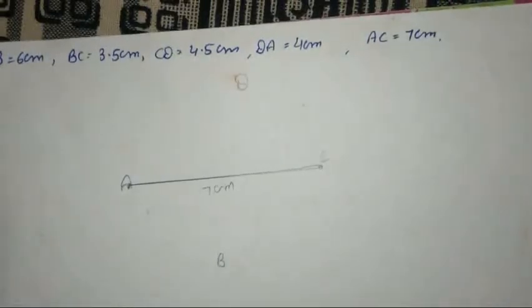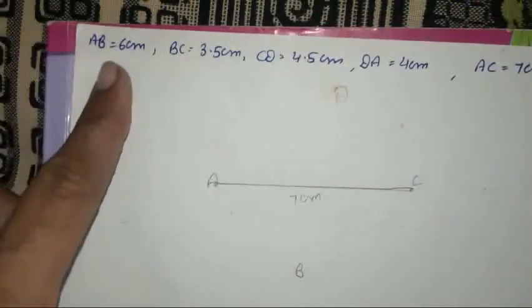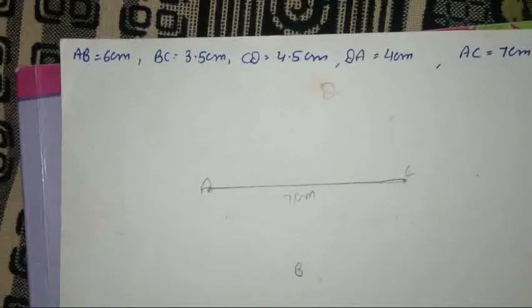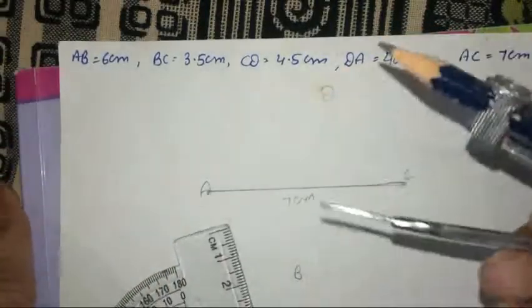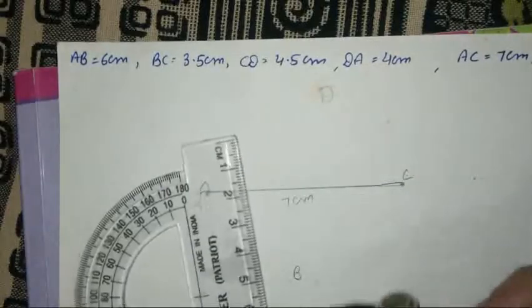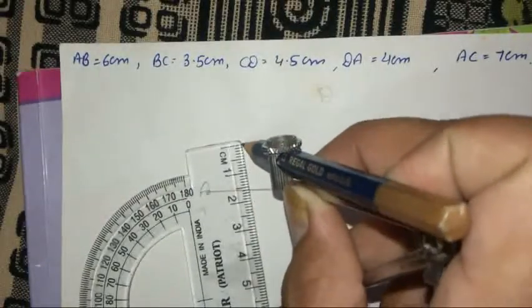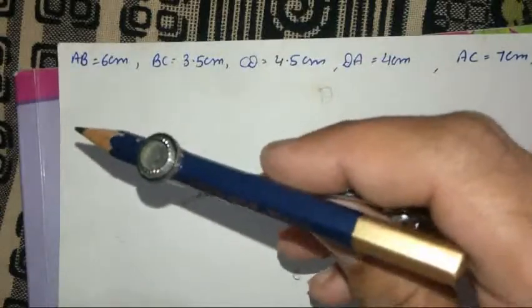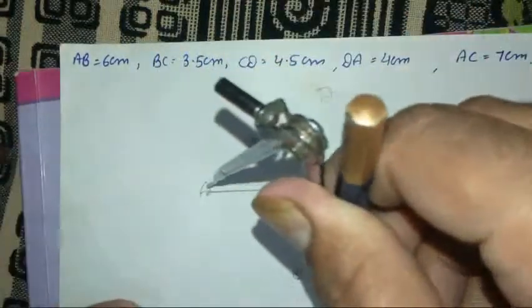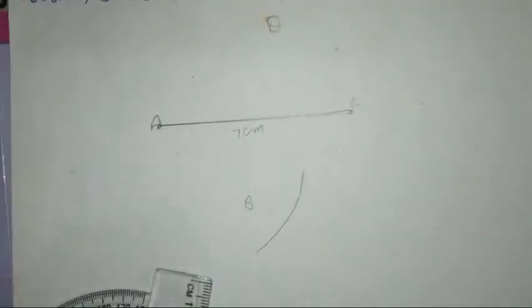After that, we take AB. AB is 6 cm. So we take a compass, put the pencil into the compass, and take a 6 cm line. 6 is here. We take a corner point and this is AB. B is on the lower side, so we draw an arc here.